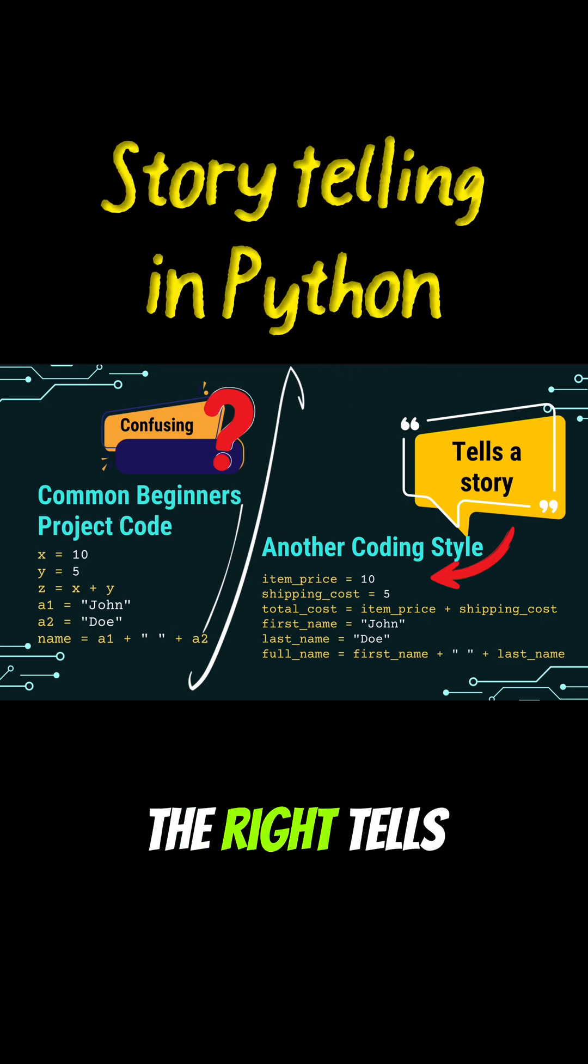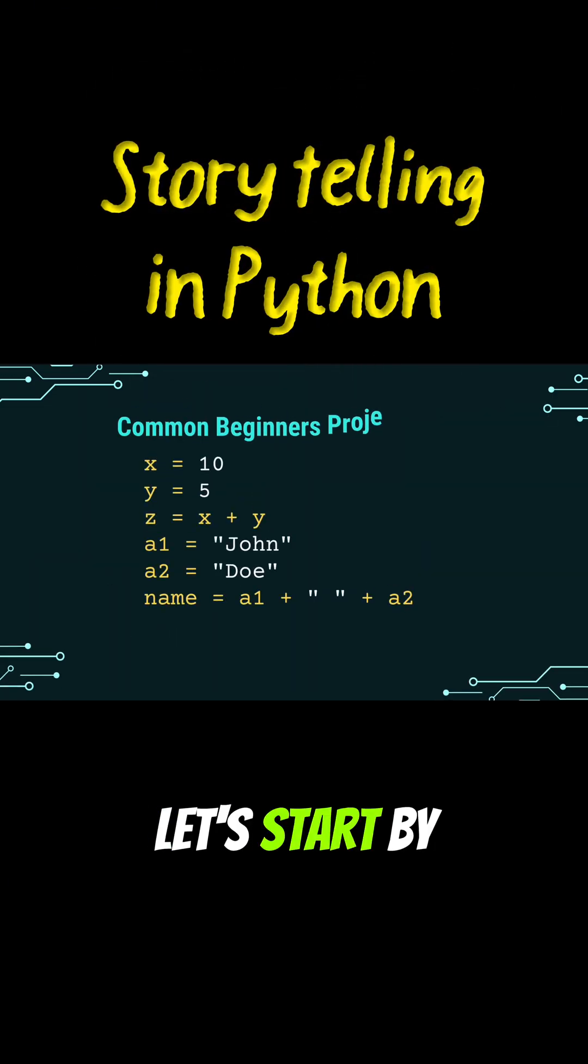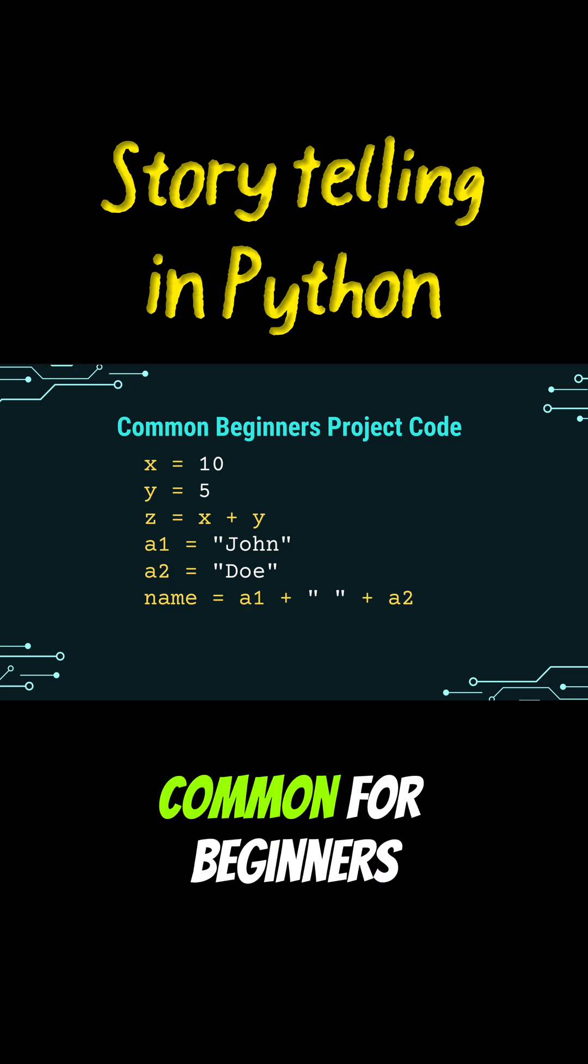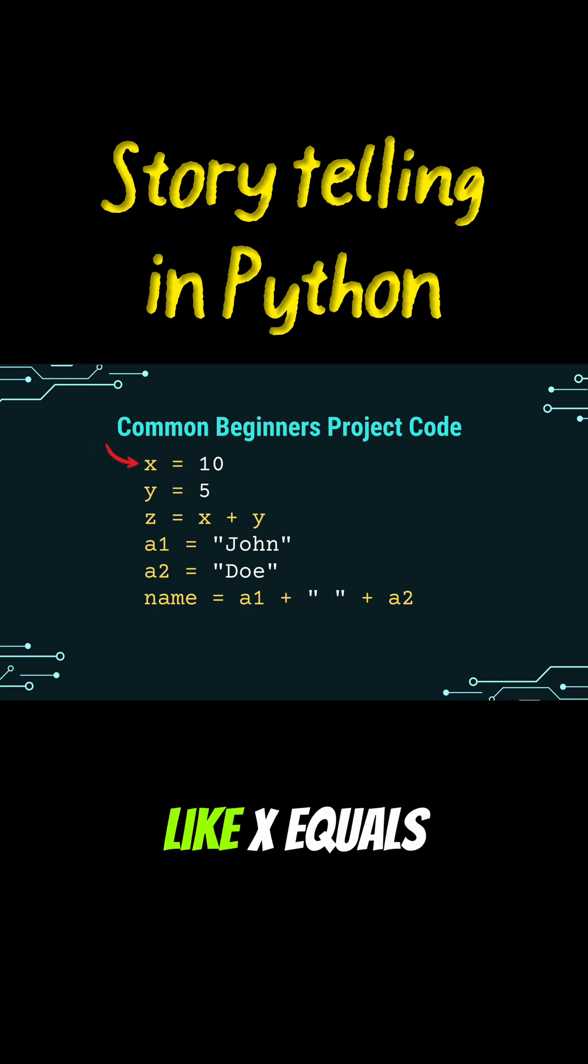The code on the left is confusing, the code on the right tells a story. Let's start by looking at a piece of code that is very common for beginners. We see things like x equals 10, y equals 5, and z equals x plus y.